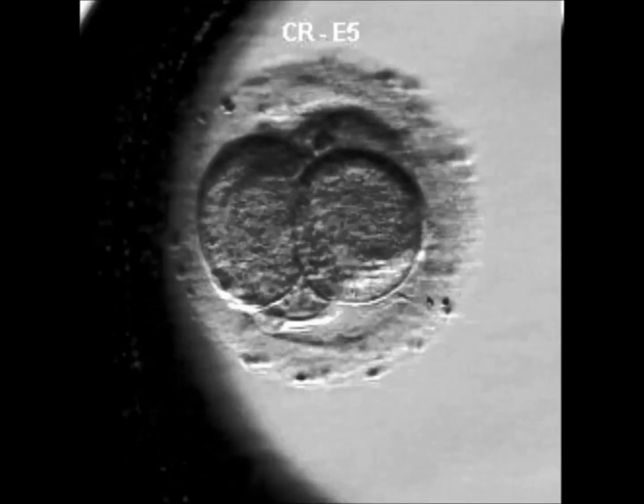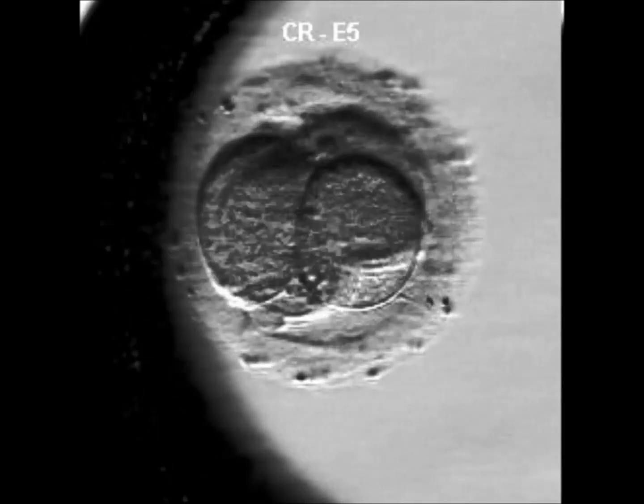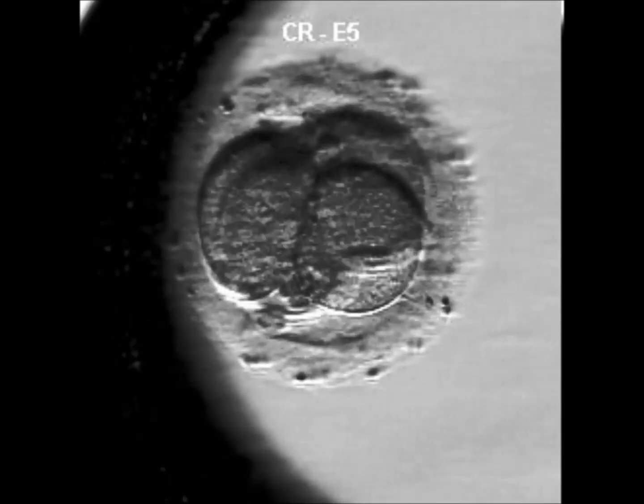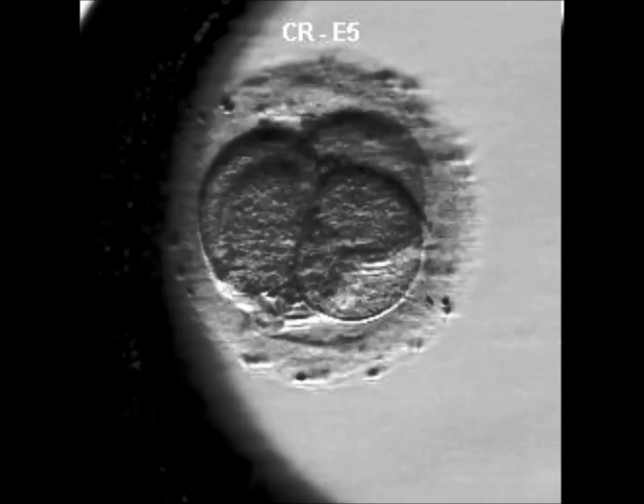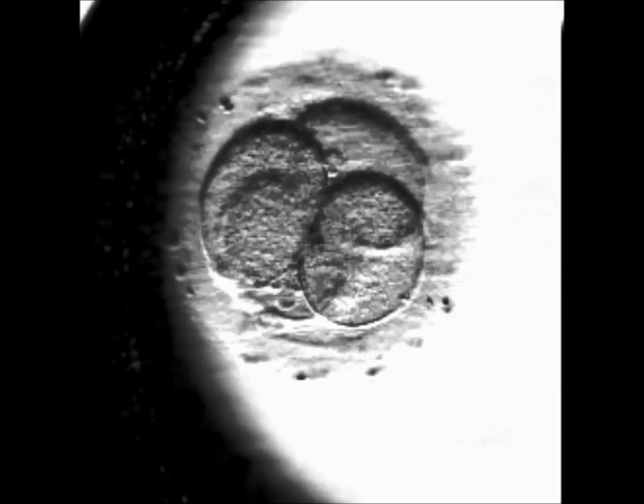Blastomere fusion is another phenomenon that results in a mosaic or abnormal embryo. Here are two examples where cells divide early on only to fuse back together again.